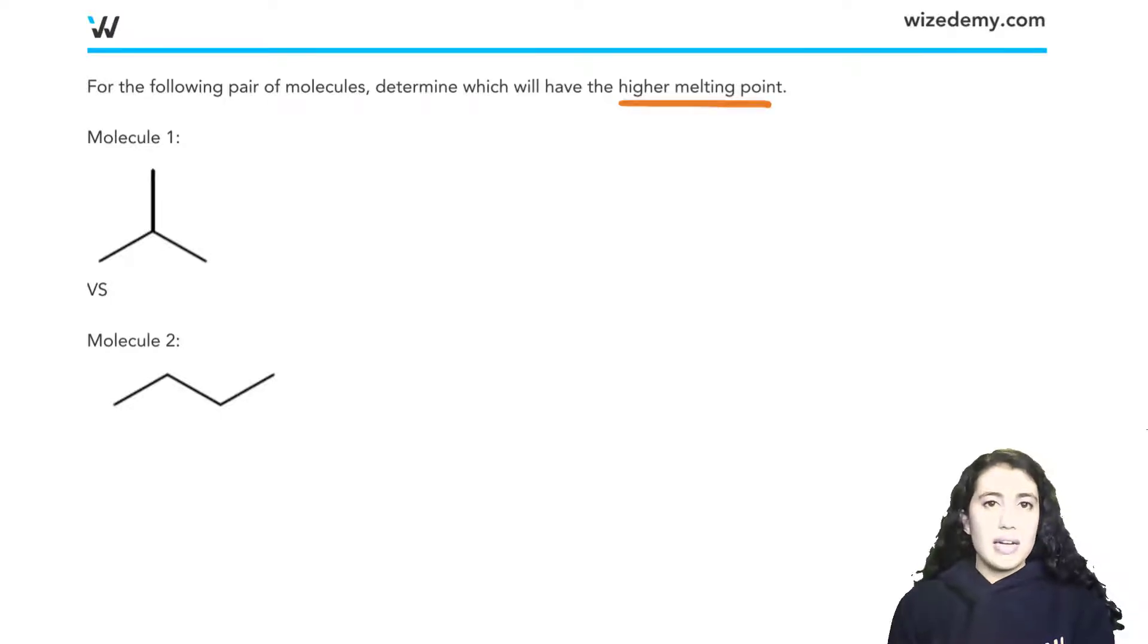And again, if it has the higher melting point, it means that it has the stronger forces. Because if you have the stronger forces, you require more energy to break, so your melting point would be a higher temperature, because we needed to put in more heat to break these.